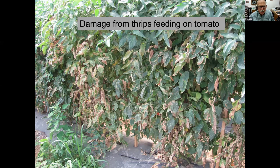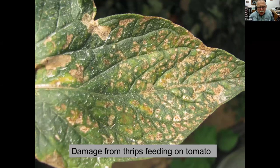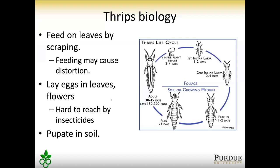This is thrips damage without the virus — and it's still a huge problem on its own. In a close-up, you can see the rasping mouthparts have scraped apart the leaf to lick up the sap. The small spots visible are frass — the insect's excrement. If you can see that frass inside those feeding areas with the naked eye or a hand lens, that's a strong sign of thrips feeding on that leaf.